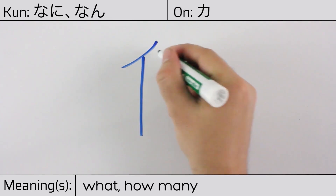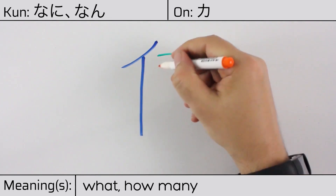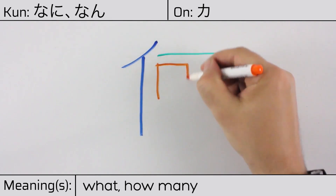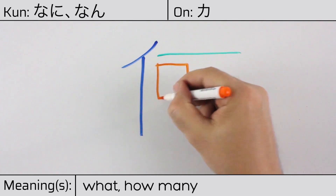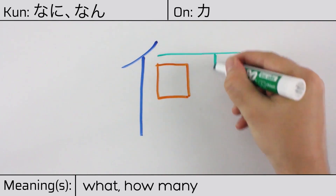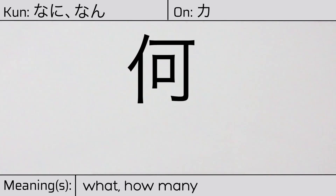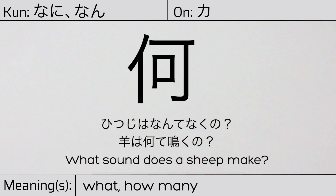You can remember this Kanji by the following hint: A good learner can ask questions. Our example sentence is: Shitsuji wa nan te nakuno? What sound does the sheep make?